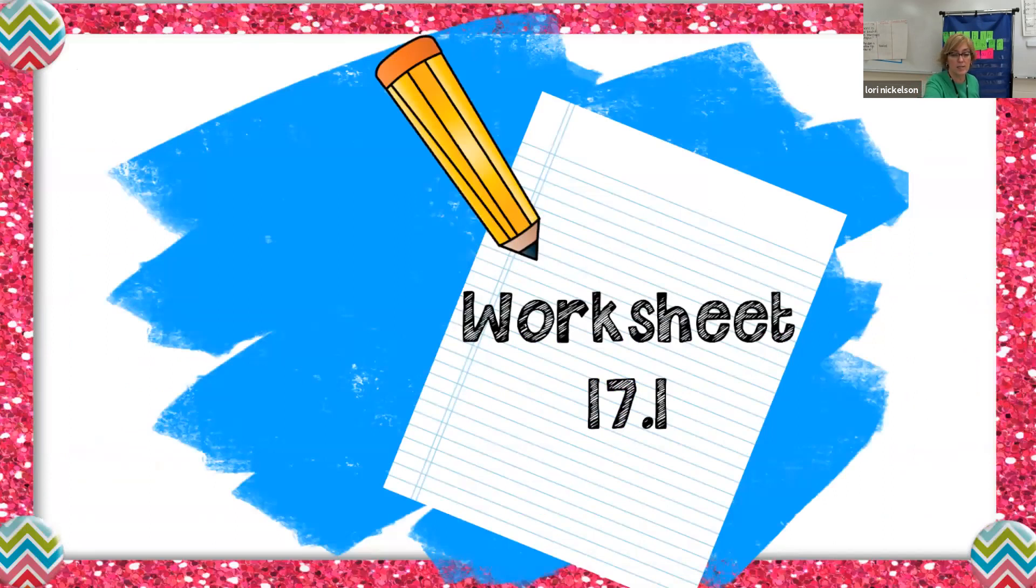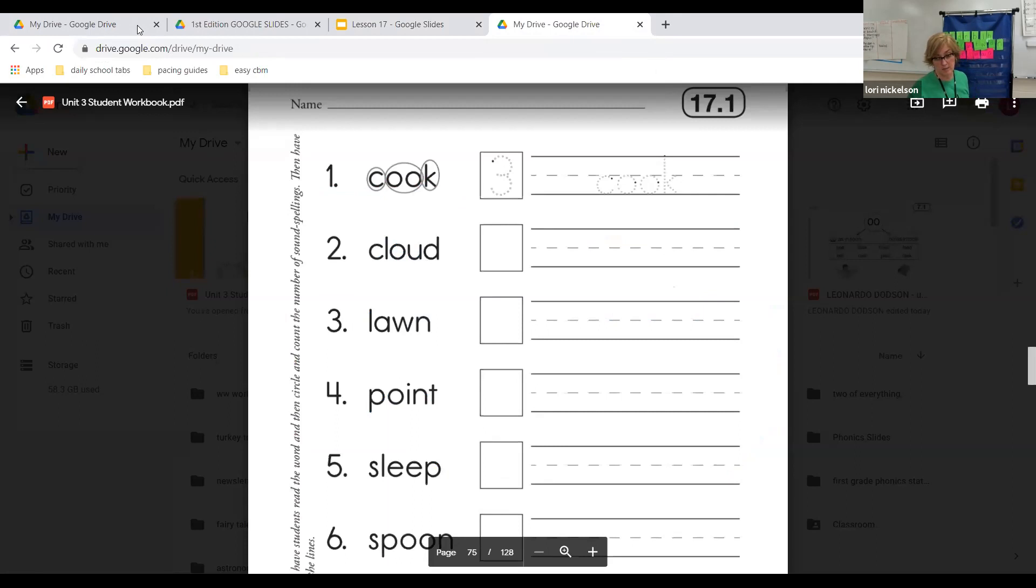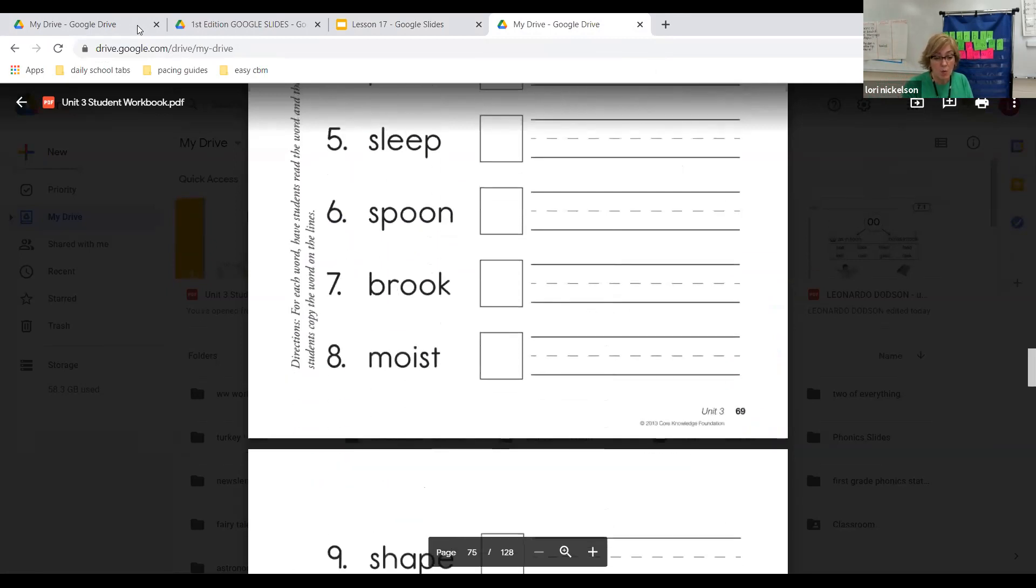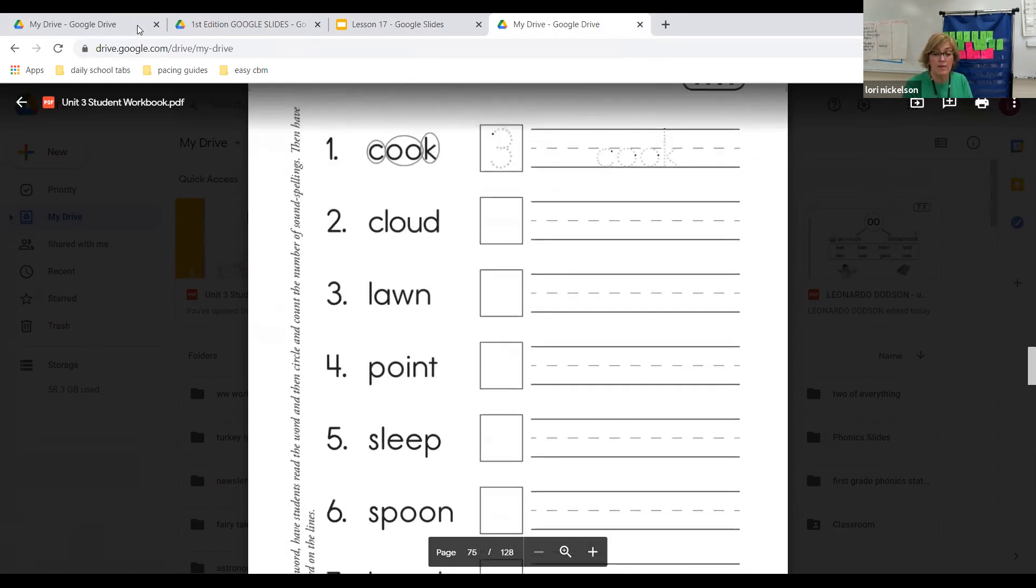So worksheet 17.1. Let's look at it. Actually, I think this right here is our worksheet. Yep. 17.1. Okay. Here we go again. We just did some of these the last time. All right. And it's the sounds and you have to circle them. You have to write the number down. Okay. You've got one through 16 to do. I will help you do the first six. Okay. The first six. So let me move my board here. Let me write these words down. So cook has already been done for you. And notice the C is circled. The double O is circled together and the K. So you have three sounds for cook.